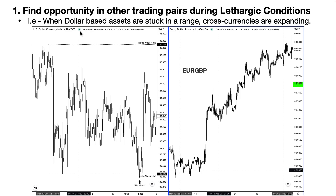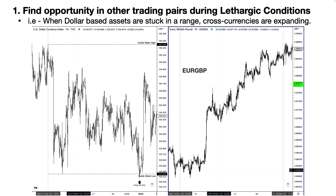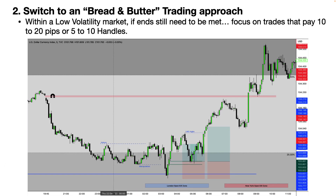Whenever dollar-based assets are stuck in a range, cross currencies are always expanding. Point two: switch to a bread and butter trading approach within low volatility market conditions. If ends still need to be met, focus on trades that pay only 10 to 20 pips or 5 to 10 handles within these market conditions. If you don't want to switch to a cross currency pair, you must switch to a bread and butter approach — get in and get out.